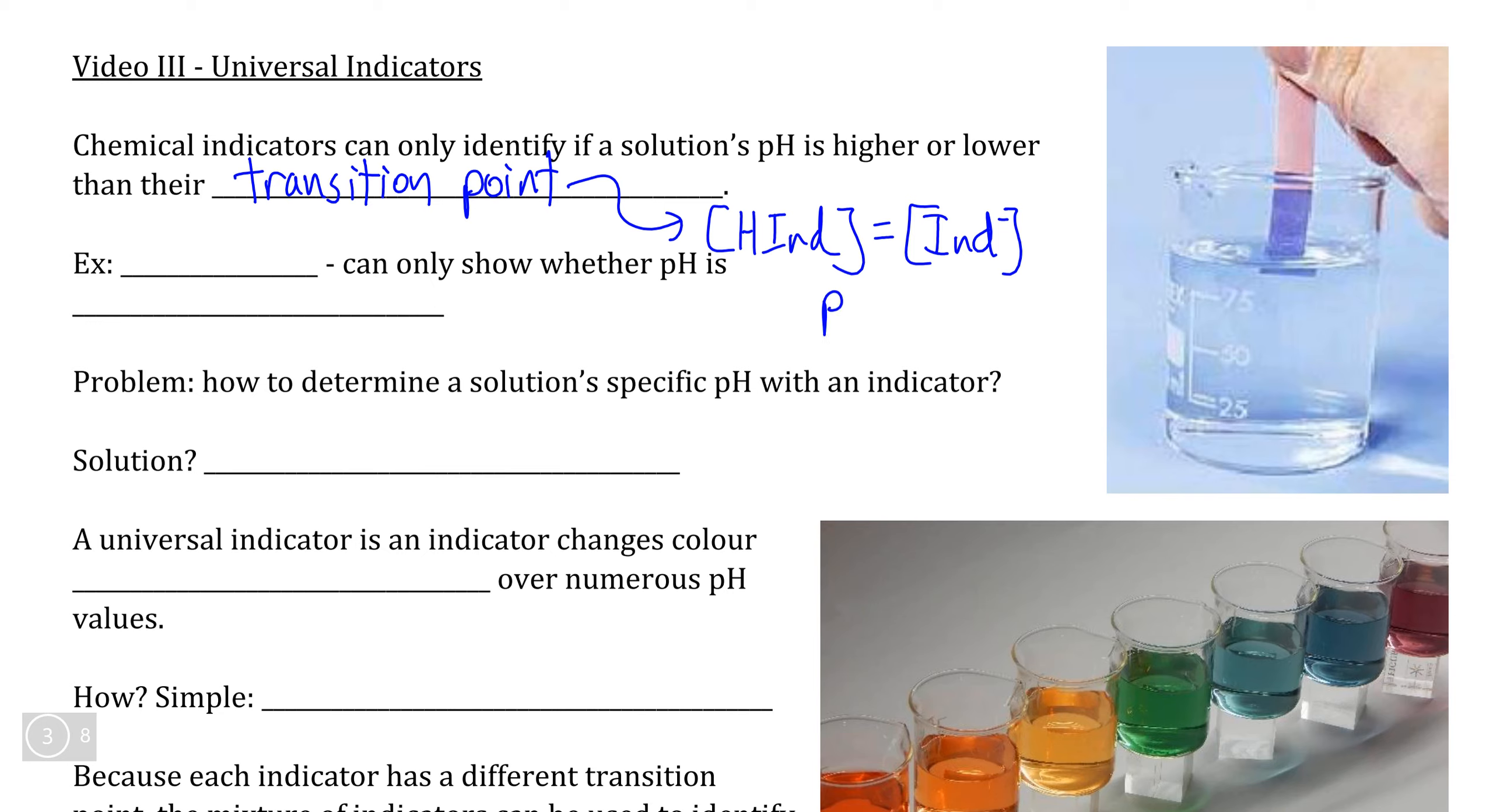Now, because of the relationship of pKa being equal to pH at the transition point, that allows us to specifically identify the pH of a solution, provided that the indicator is at the transition point. However, if this is not true, if we have a situation where we have more of the acid form or more of the base form, we will have no idea what the pH is beyond the fact that it is greater than or less than the pH at the transition point.